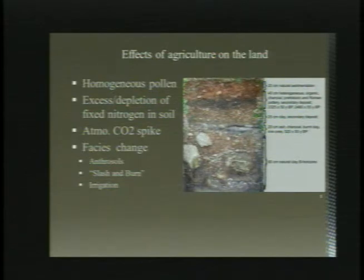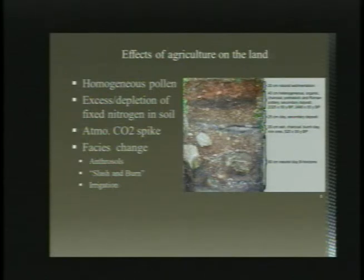This lack of pollen diversity occurs when homogenous agricultural fields replace natural and diverse plant communities. Unsustainable agricultural fields remove large amounts of elements such as fixed nitrogen from the soil, while other agricultural practices actually have an excess amount of nitrogen. Deforestation for the purpose of agriculture will at the very least be recognizable as a facies change in stratigraphic layers, and could at most be correlated with spikes of atmospheric CO2.